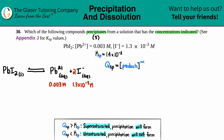Writing the Qsp expression — just like Ksp — it equals the concentration of products: Pb²⁺ times I⁻ raised to their coefficients. Since there's a 2 in front of I⁻ in the balanced equation, we square that term. Pb²⁺ is raised to the first power.